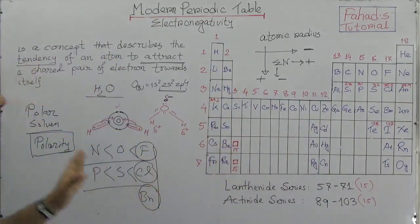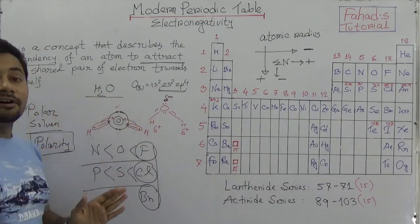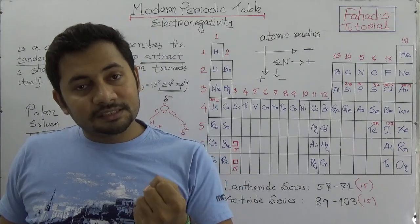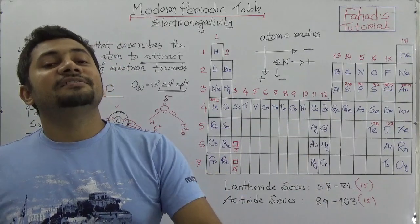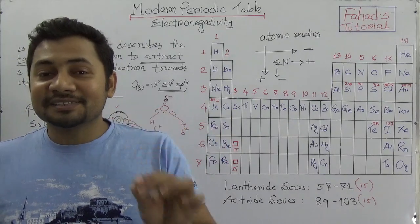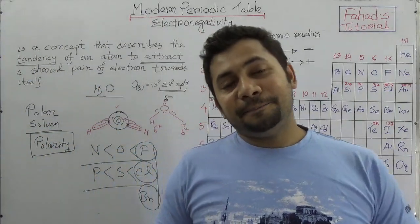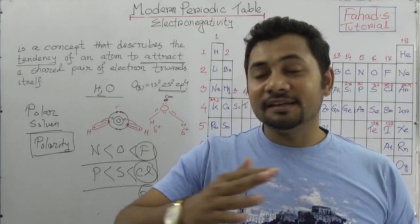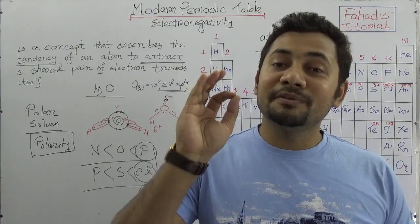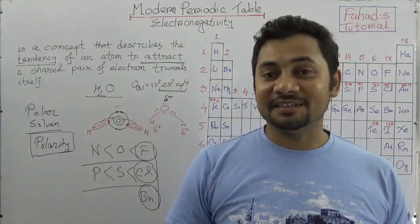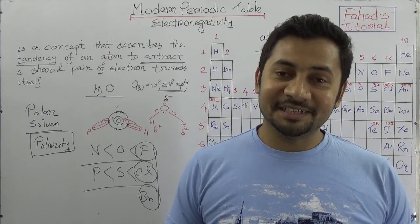I hope you understand electronegativity. Remember the definition and the concept using the water example — oxygen attracts the shared pair of electrons in a covalent bond, so oxygen becomes partially negative and hydrogen becomes positive. That is the basic basis of polarity in covalent compounds. I have uploaded a series of videos; I hope you have seen them all. Do let me know your feedback. See you in the next class. Stay well, stay blessed. Bye.